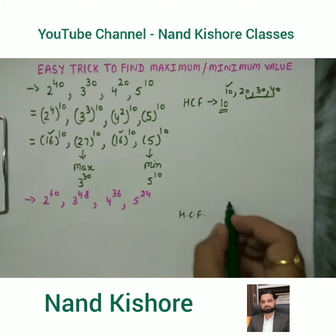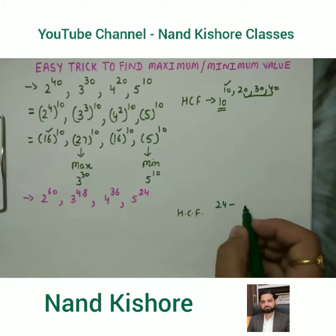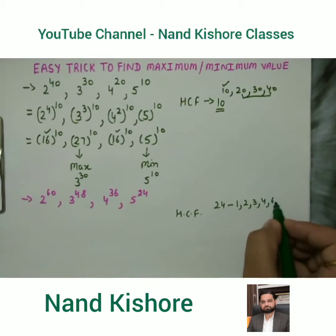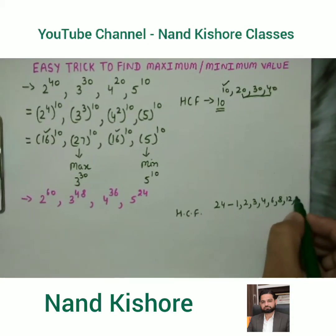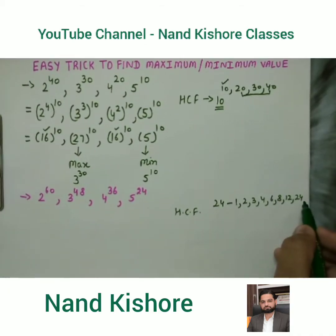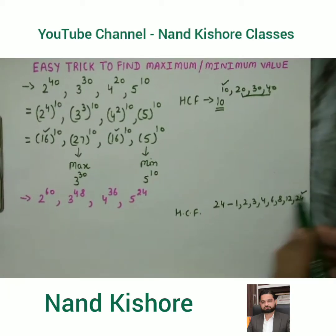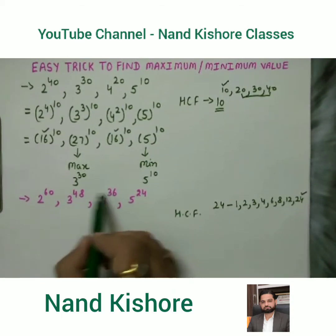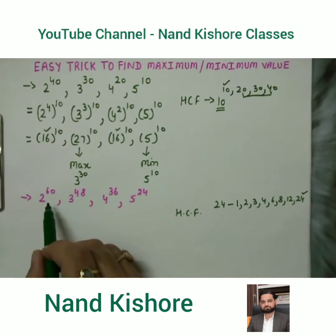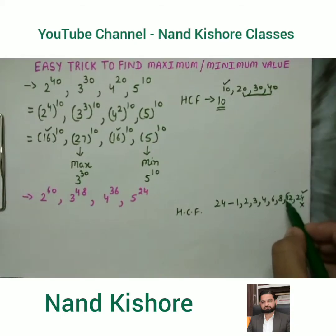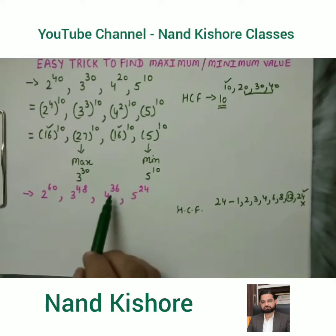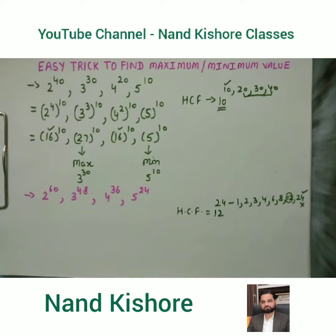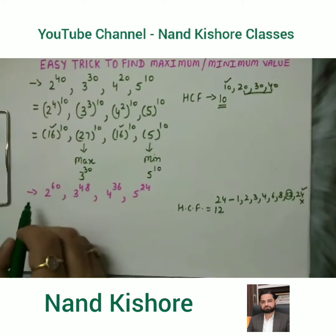The lowest value is 24. We check which tables 24 appears in: 1, 2, 3, 4, 6, 8, 12, and 24. First check if 24 works as HCF — but 36 and 60 do not appear in the table of 24, so 24 is rejected. Next, try 12: 12×2=24, 12×3=36, 12×4=48, 12×5=60. All values appear, so HCF is 12.